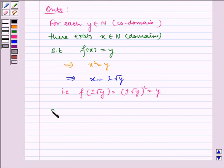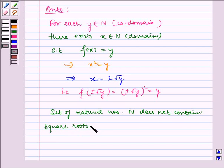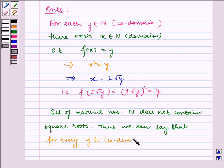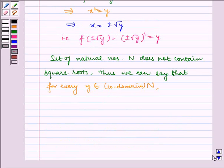As we know, set of natural numbers N does not contain square roots. Thus, we can say that for every y belongs to co-domain N, there does not exist x = ±√y which belongs to domain N such that f(x) = y.